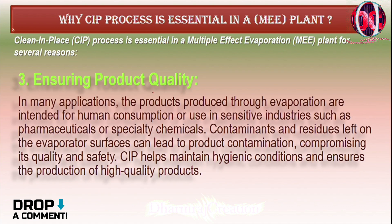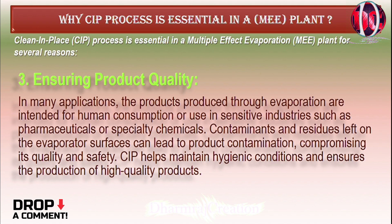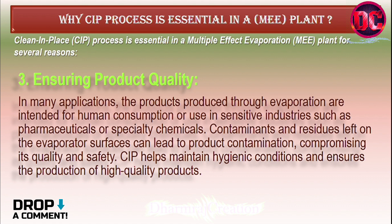Third, ensuring product quality: in many applications, the products produced through evaporation are intended for human consumption or use in sensitive industries such as pharmaceuticals or specialty chemicals. Contaminants and residues left on the evaporator surfaces can lead to product contamination, compromising its quality and safety. CIP helps maintain hygienic conditions and ensures the production of high-quality products.